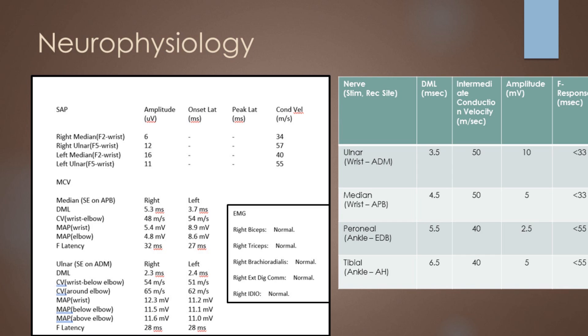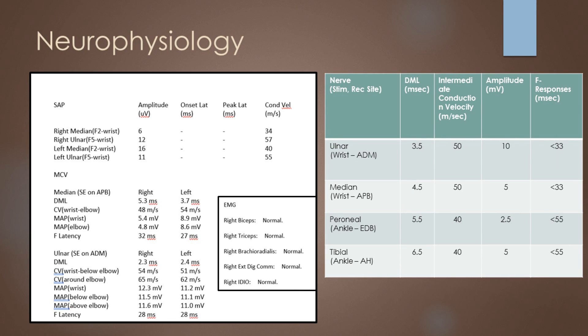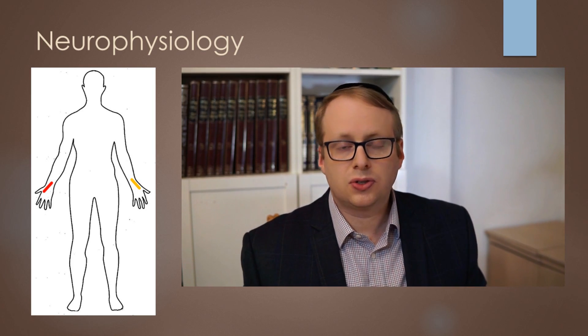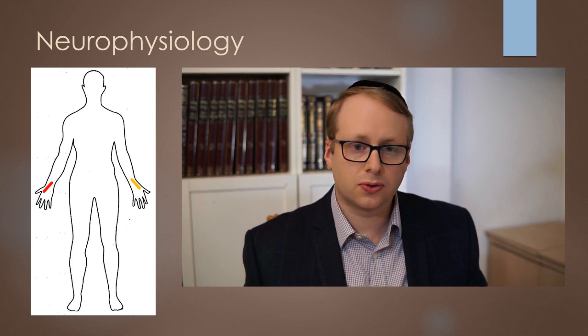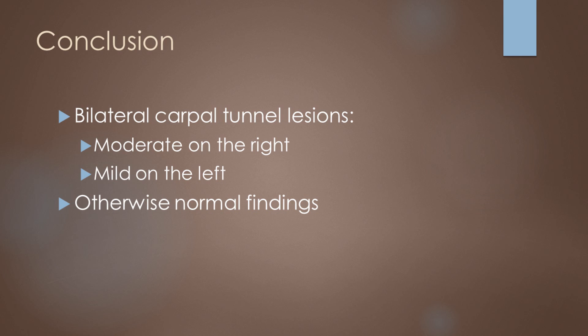Clearly there is some slowing along the line and we've managed to localise it on these motor studies at the wrist level. We can also look at the EMG findings, because we were considering radiculopathy and potential brachial plexopathy in our differentials — and all these were normal. So to recap: we have sensory reduction in amplitude and slowing across the wrist for both the median sensory digital nerve for F2 on the right side and to a lesser extent on the left, and motor impairment on the right side for the median nerve but not the left. Putting that all together, we have isolated median neuropathies across the wrist compatible with carpal tunnel lesions — bilateral carpal tunnel lesions, moderate on the right and mild on the left, and otherwise normal findings.